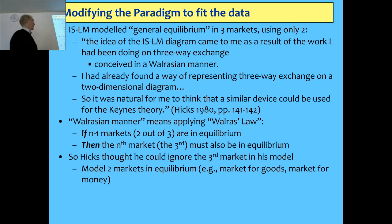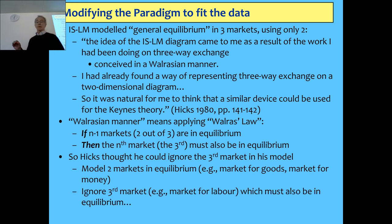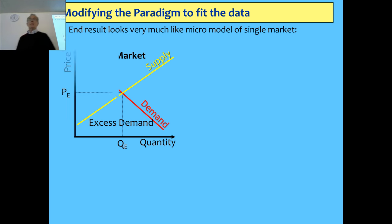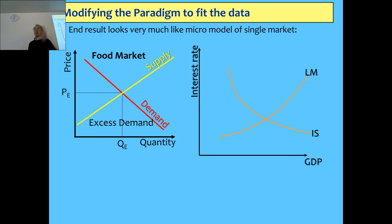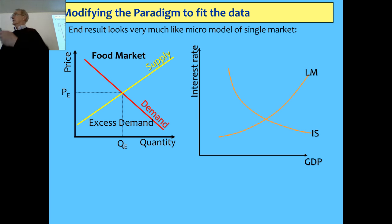He used this logic with three markets: the market for goods, the market for money, and the labour market. But the ISLM model did not include the labour market — he used Walras's Law to eliminate it. He then represented the whole economy on a two-dimensional diagram with GDP on one axis and the interest rate on the other. Rather than having an individual good and its price, as in micro, you have total GDP and the interest rate. You still get the same basic idea: a downward sloping curve, an upward sloping curve, and equilibrium where they intersect.